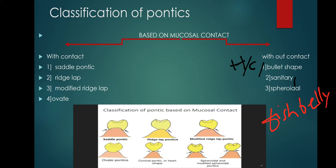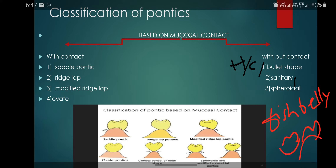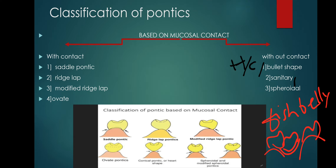Sanitary pontics are further classified into three types. The conventional sanitary pontic is also called fish belly pontic. The second type is the modified sanitary pontic, also called barrel pontic or arc fixed pontic, which has a hyperboloid shape at the gingival surface.